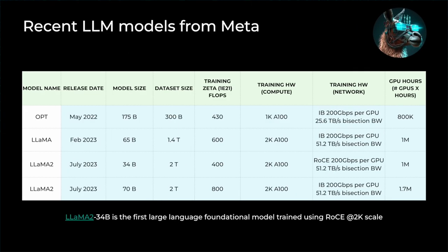As more concrete examples, these are recent large language models trained at Meta. The latest LLaMA 2 with 70 billion parameters was trained with 2 trillion tokens, requiring 800 zettaflops to finish training. That translates to 1.7 billion GPU hours assuming NVIDIA A100 GPUs, or more than one month even using 2,000 A100 GPUs. This is a huge amount of compute.